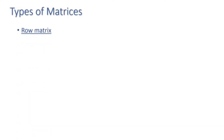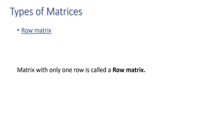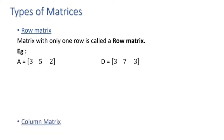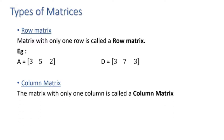The first type we are going to study is the row matrix. These matrices have only one row — look at these examples, they have only one row. The next type is the column matrix. If a row matrix is a matrix with only one row, then a column matrix will be a matrix with only one column. Here are some examples.